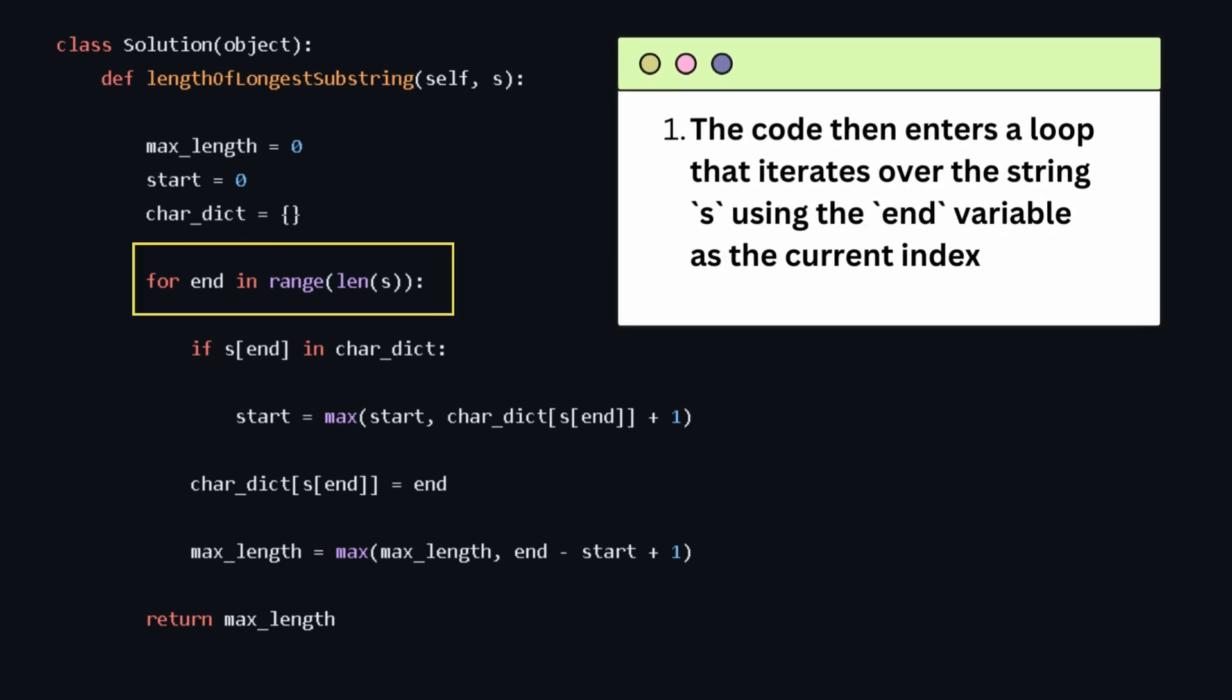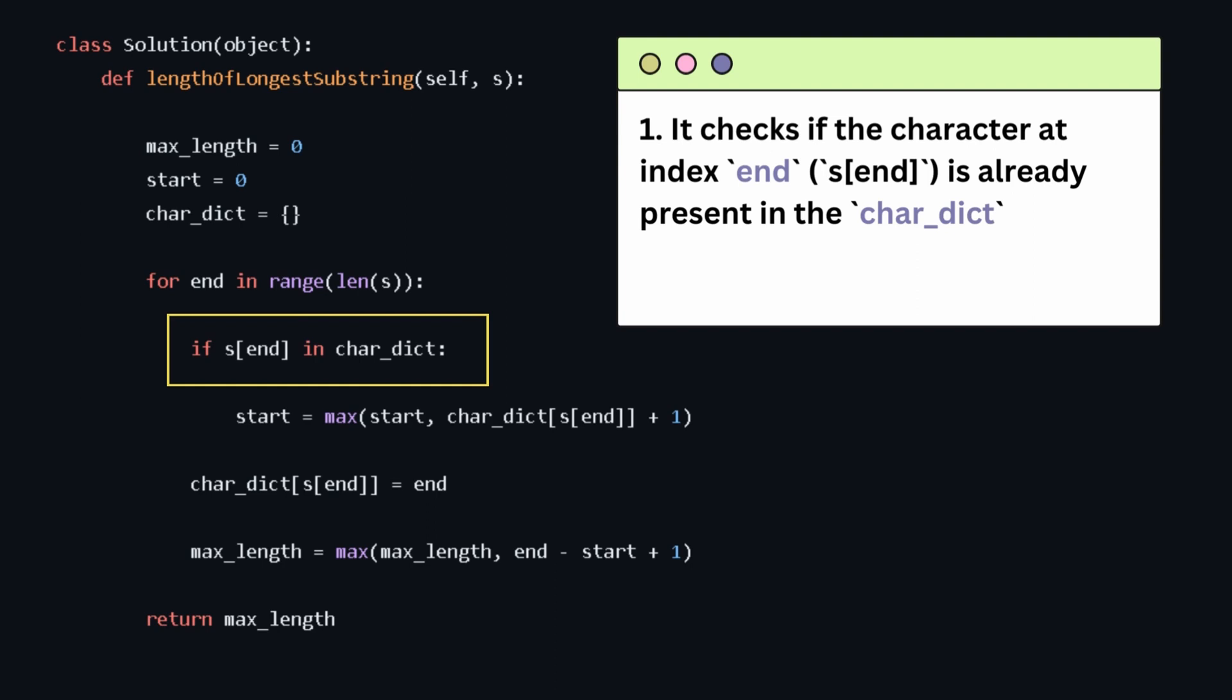The code then enters a loop that iterates over the string s using the end variable as the current index. The end index represents the ending index of the current substring being examined. Within the loop, the code performs the following steps. Number one, it checks if the character at the index end is already present in the character dictionary.